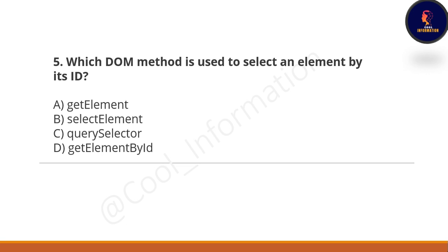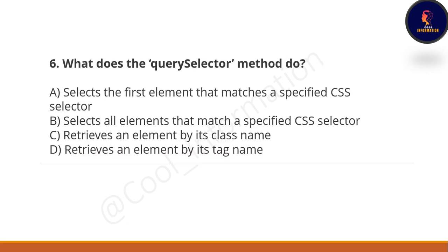Next question: Which DOM method is used to select an element by its ID? Option A: getElementById. Option B: selectElement. Option C: querySelector. Option D: getElementById. The correct option is D — the getElementById method is used to select an element by its ID.